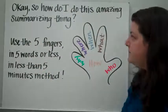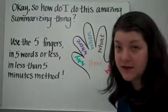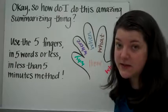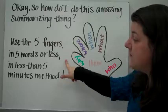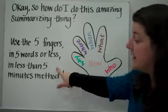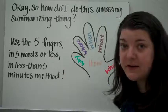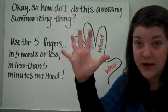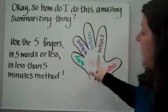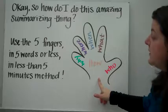So you say, alright, so how do I do this summarizing thing? Okay, well as it turns out, it's actually pretty easy. So what you're going to do is use the five fingers in five words or less in less than five minutes method. This is pretty awesome. So you want to take a look at your hand. Your hand is important here. And I've drawn a big one for us here.